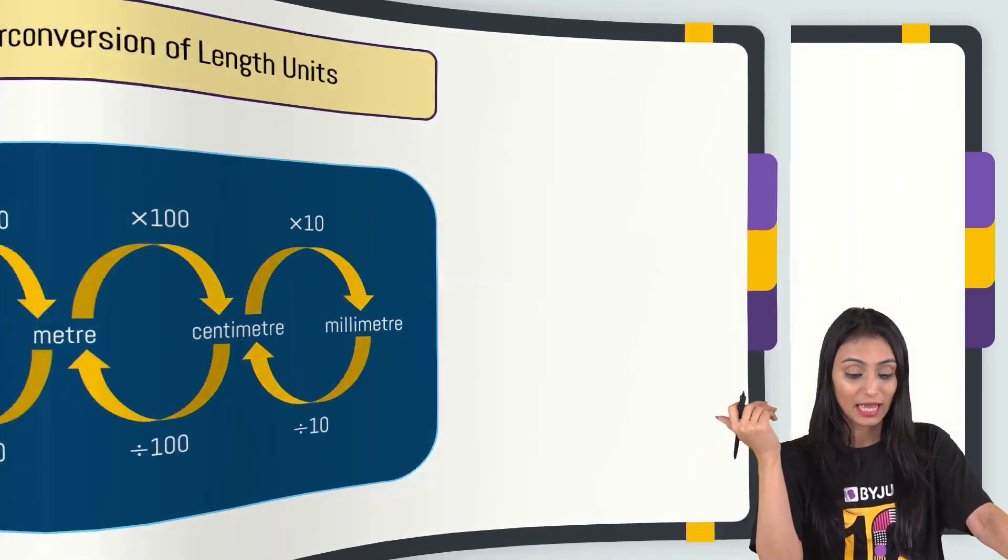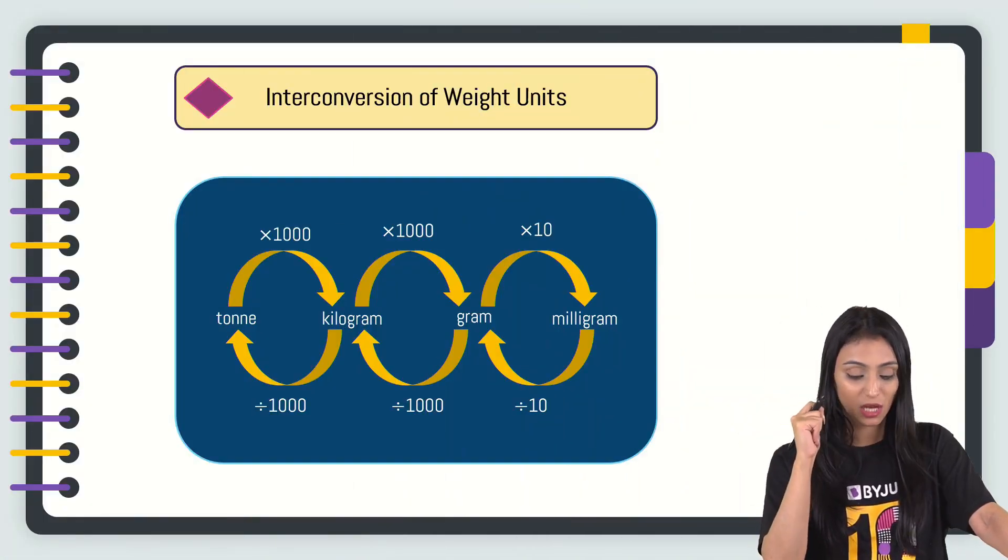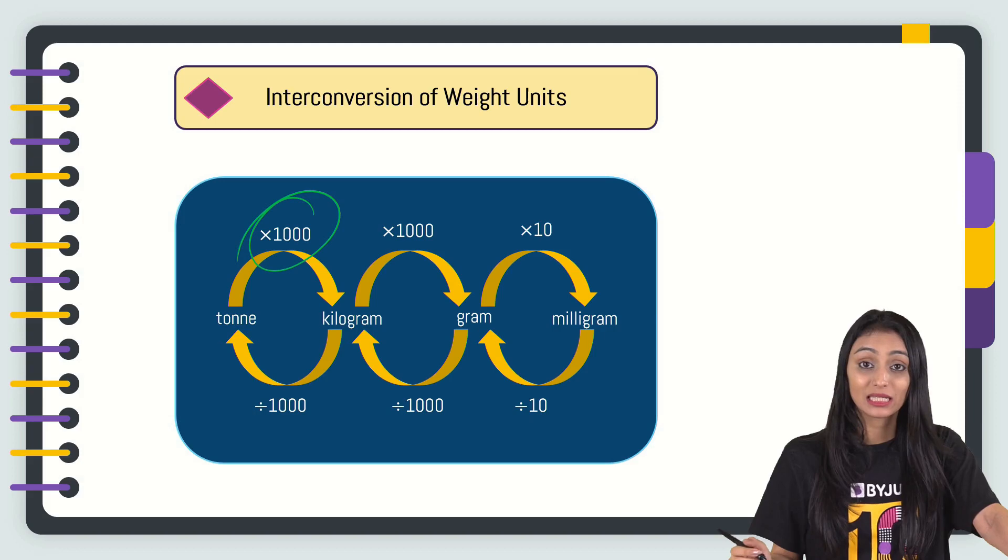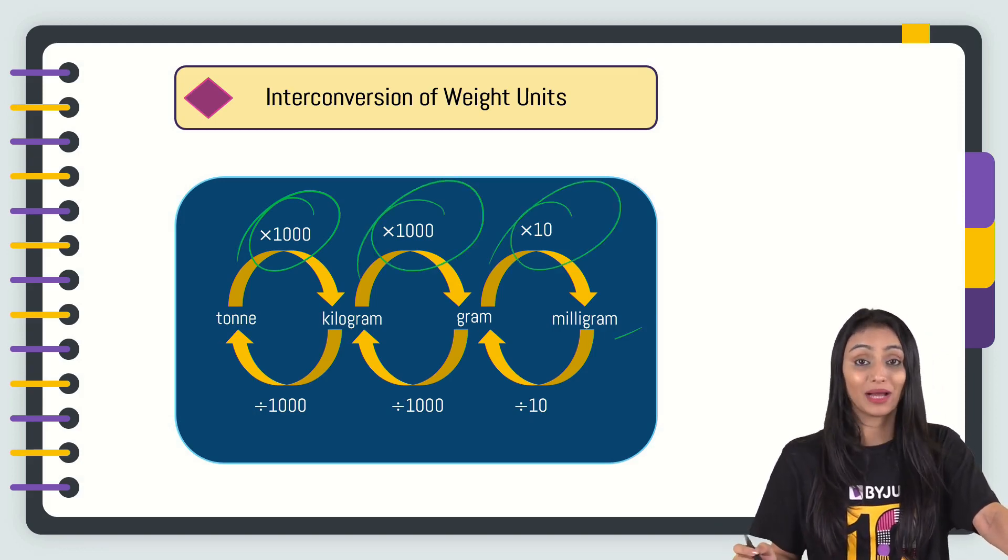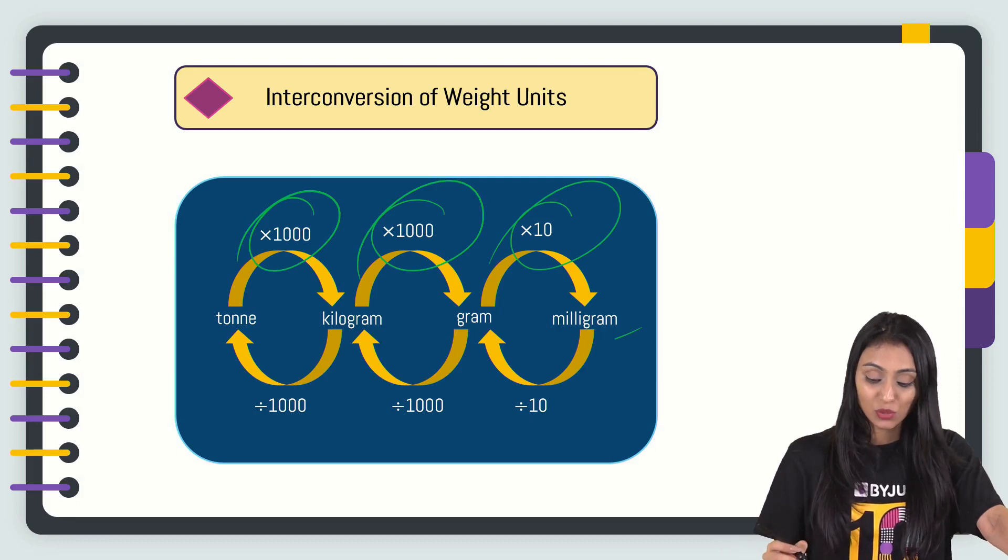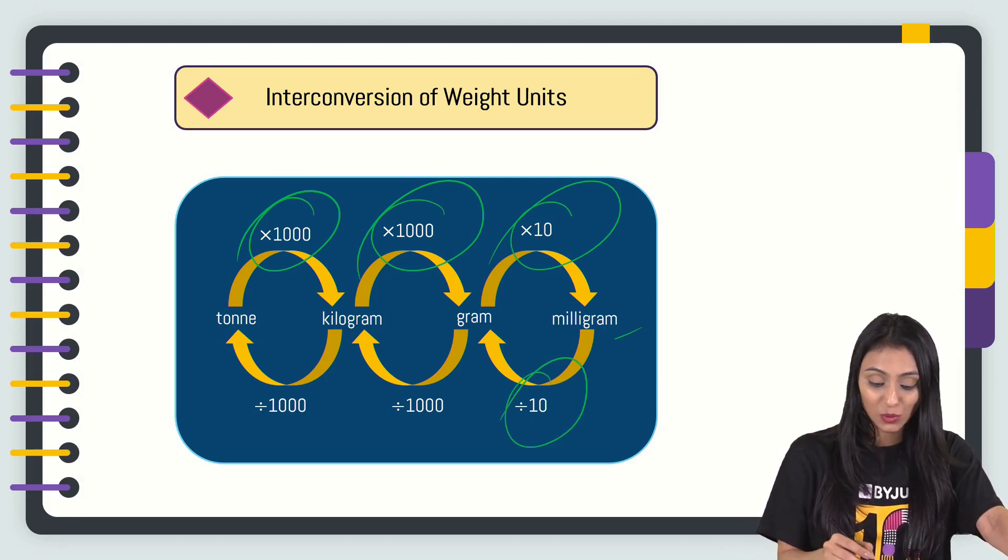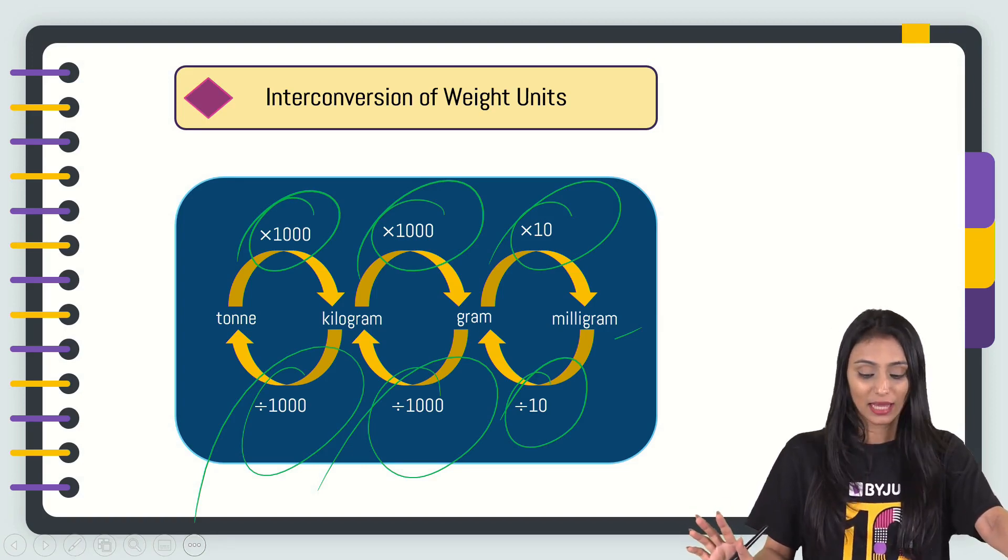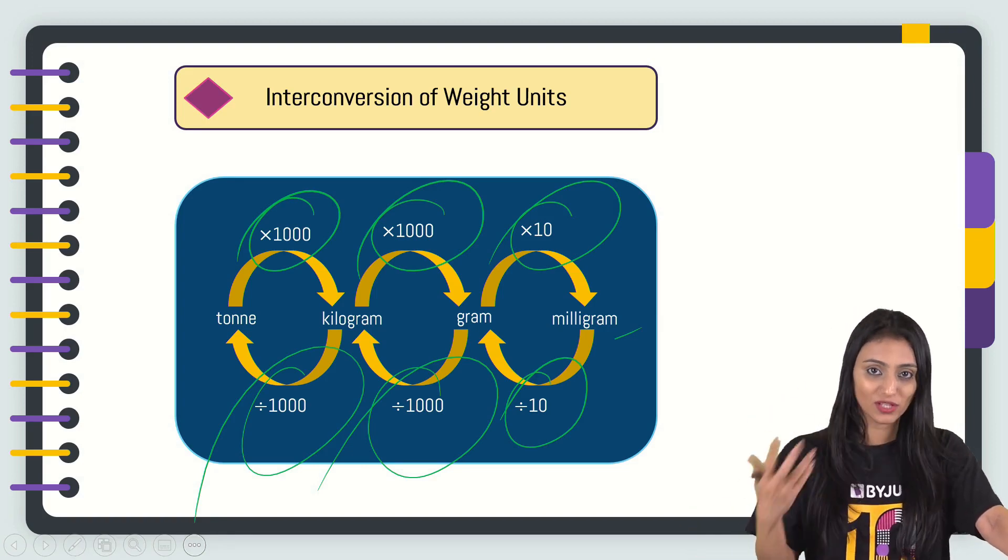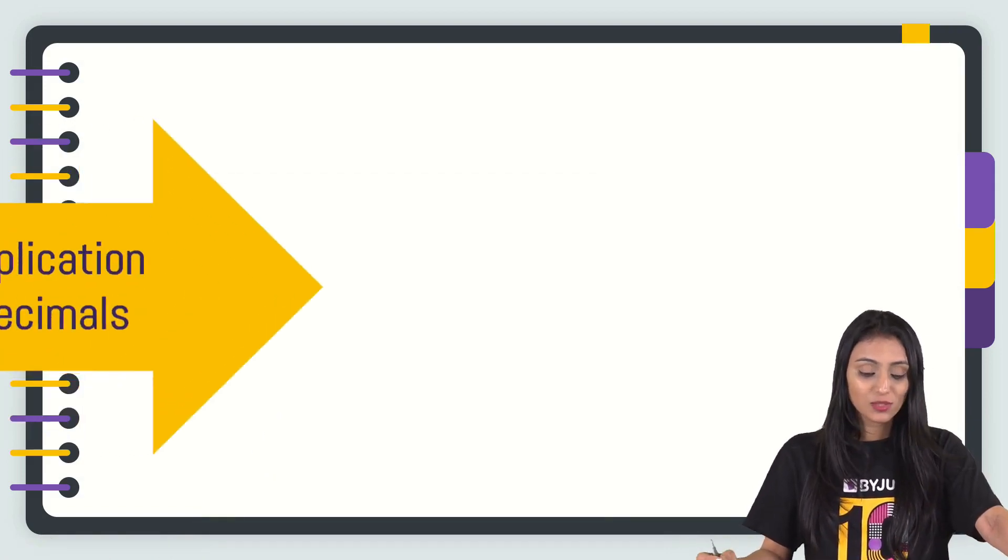Let's talk about weight units now. From ton to kilogram, you multiply by 1000, kilogram to gram multiply by 1000, and gram to milligram multiply by 10. Similarly, milligram to gram we divide by 10, gram to kilogram divide by 1000, kilogram to ton divide by 1000. It's a very simple one. Now keeping all this in mind, we can solve questions based on that as well. For now, let's move ahead.